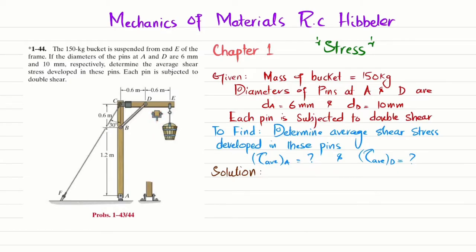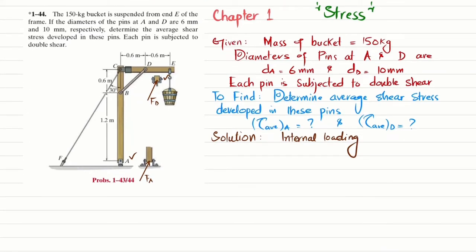Let's start with the solution. The first step is to find the internal loading. The forces exerted on pins D and A are equal to the support reactions at D and A. So we will find the reaction forces at D and A — this is F_A and this is F_D. To find F_D, we will take the free body diagram of member CE.